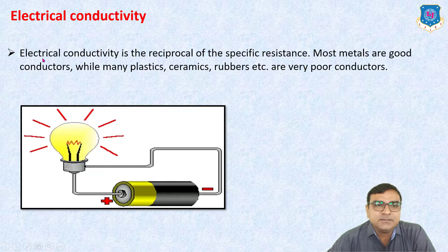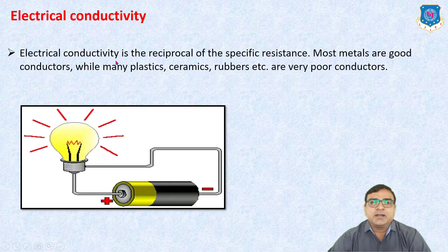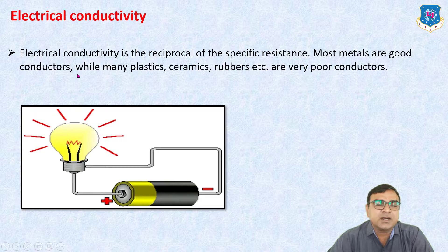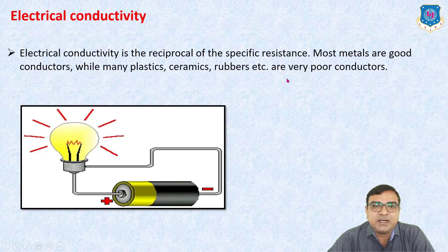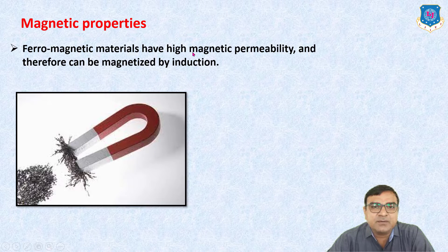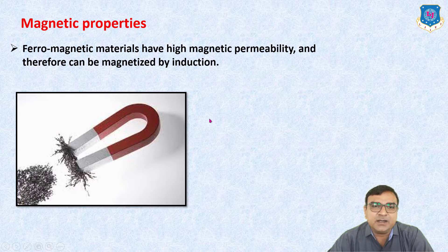Electrical conductivity is the reciprocal of specific resistance. Most metals are good conductors, while many plastics, ceramics, rubbers, etc. are very poor conductors. Ferromagnetic materials have high magnetic permeability and therefore can be magnetized by induction.